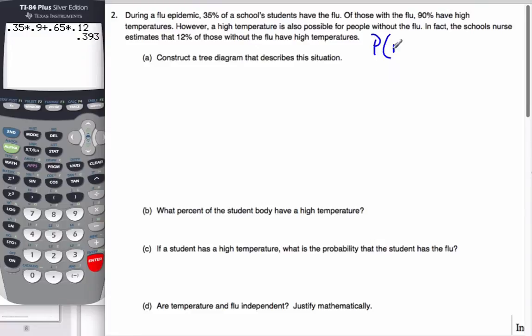as you read this question, the first thing I always do is put notation with every single number that I have. And I'm careful that I use good probability notation. So the flu epidemic says 35% of the students have the flu, so the probability of flu equals 0.35. Of those with the flu, 90% have a high temperature. So that's probability of temperature given they have flu. I'm using the conditional notation as it's quite appropriate for this time here, and it's 0.9.